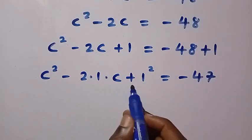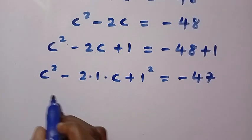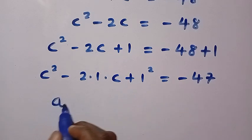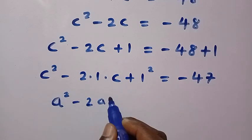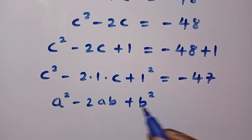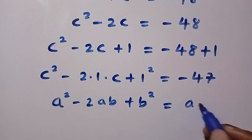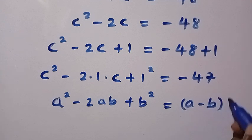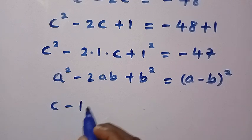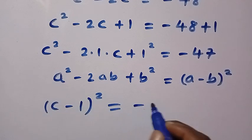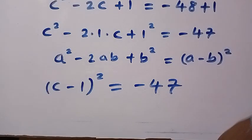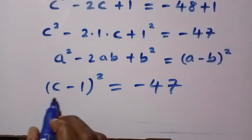Let's consider this with A squared minus 2AB plus B squared. This gives A minus B all squared. Then by replacing it we have C minus 1 squared equals minus 47. Let's take the square root of both sides.